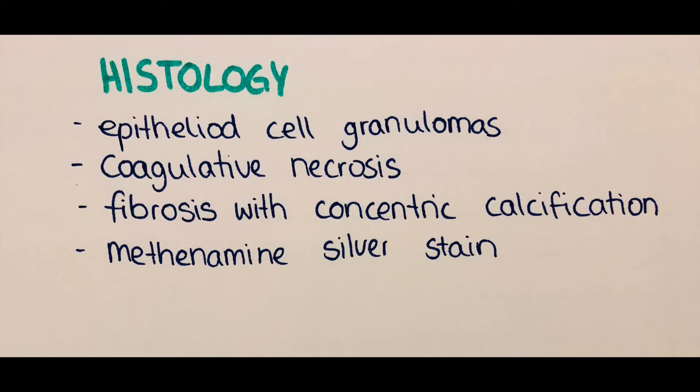Regarding the histologic appearance: the spores lead to formation of epithelioid cell granulomas. Epithelioid cells are formed by the fusion of activated macrophages, which form cavities in the lung with coagulative necrotic lesions. Under treatment or self-limitation, the lesions become fibrotic, forming scar tissue with concentric calcification, which appears like the bark of a tree. Visualization of the fungi is done by special staining with methenamine silver.